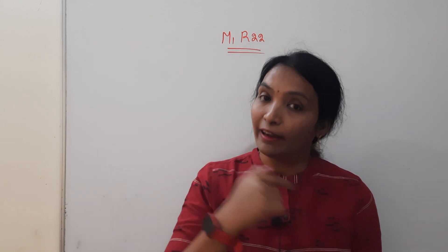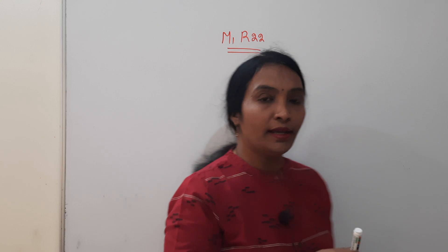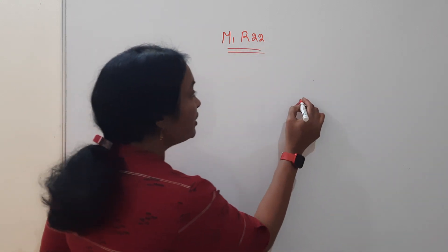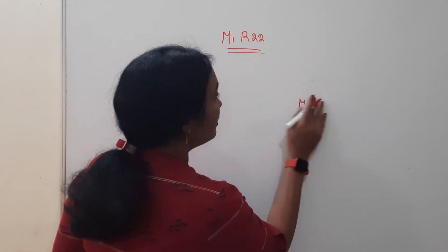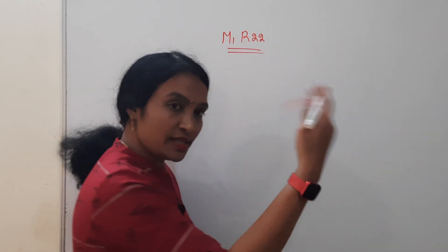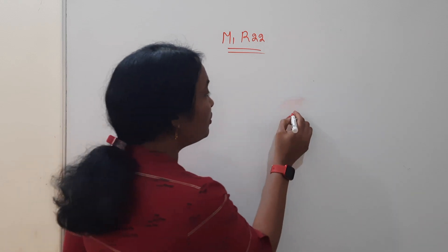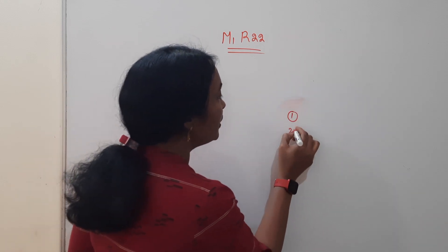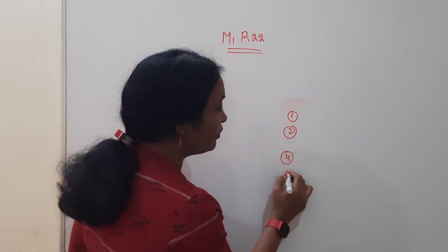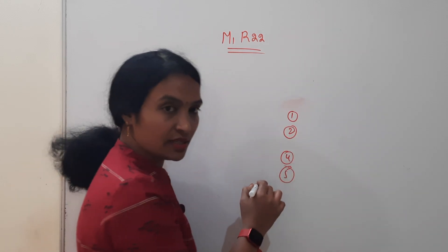R18 M1 — if you don't have R22, you are going to change Unit 1. This is the first question. Unit 1, Unit 2 as it is, Unit 4, Unit 5 as it is.